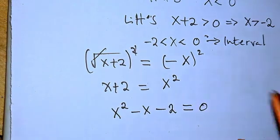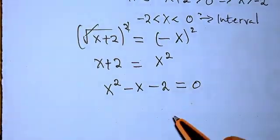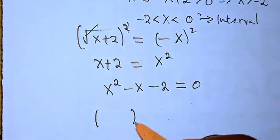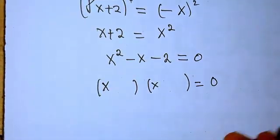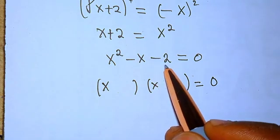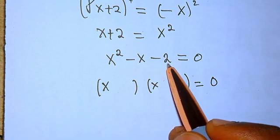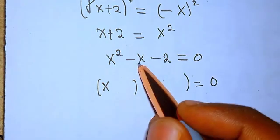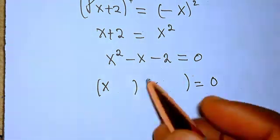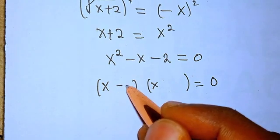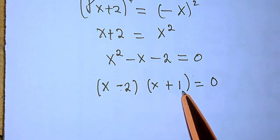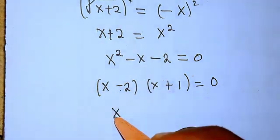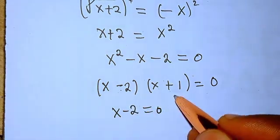Rearranging, we have x squared minus x minus 2 equals zero — a quadratic equation. To factorize, we look for two factors of minus 2 that multiply to give minus 2 and add to give minus 1. Those are minus 2 and plus 1. So we get x minus 2 times x plus 1 equals zero, giving us x minus 2 equals 0 or x plus 1 equals 0.